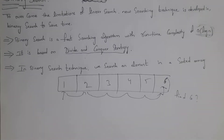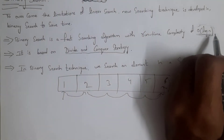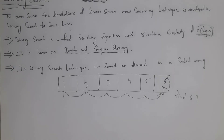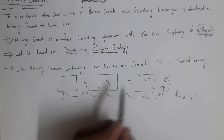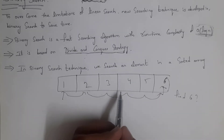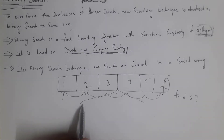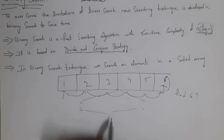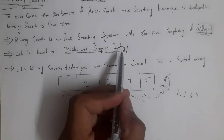In order to overcome the problem of linear search, binary search algorithm was created to save time. Binary search is a fast searching algorithm with runtime complexity of O(log n). This binary search is based on divide and conquer strategy. In divide and conquer strategy, we divide the problem into sub-problems, solve the sub-problems, and then combine the solutions of sub-problems into a single solution.